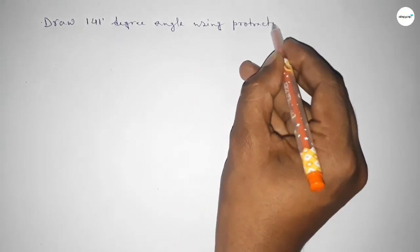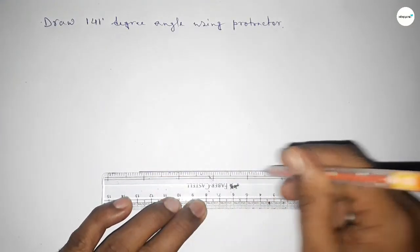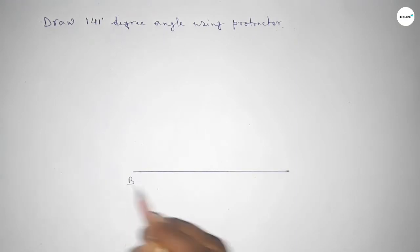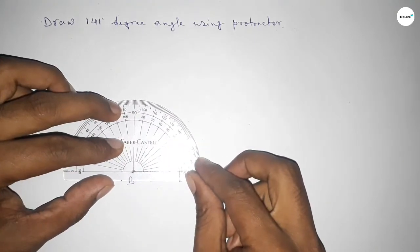So let's start the video. First of all, we have to draw a straight line of any length. Then taking point B and point C here. Now putting the protractor on point B perfectly.